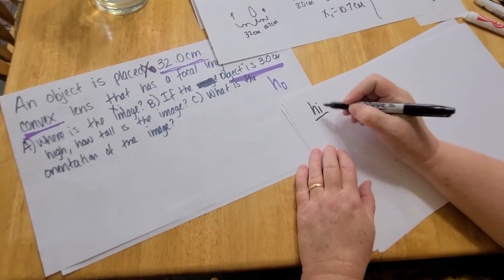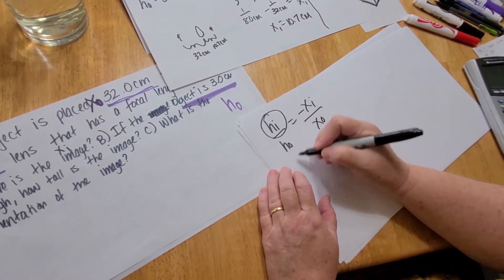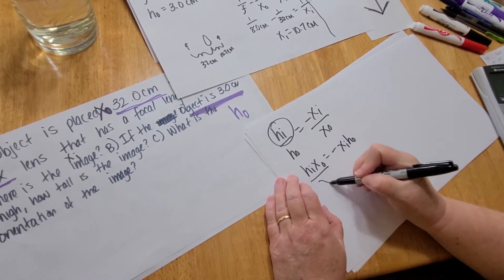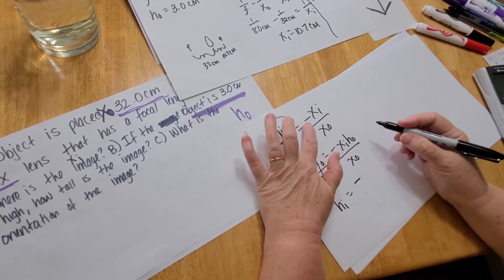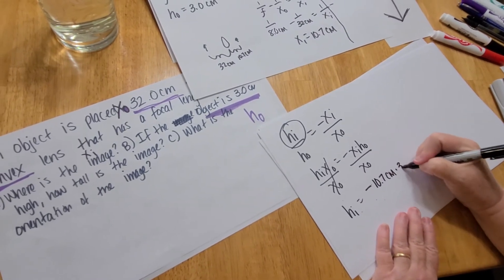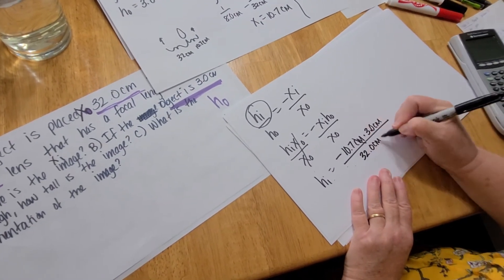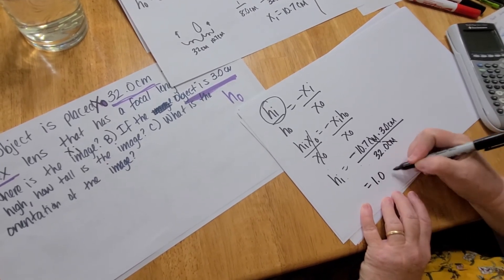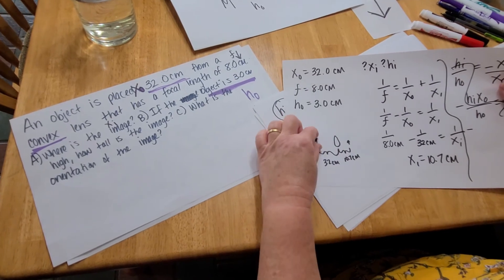HI over HO equals negative XI over XO. I cross multiply: HI times XO equals negative XI times HO. Then I divide both sides by XO. Negative XI, that's where the image is going to be located, so that's my 10.7 centimeters. I multiply that by the height of the object, three centimeters, divided by the placement of the object, 32 centimeters. One of the centimeters will cancel out. I take 10.7 times three and divide it by 32 and I get one. So the image is only going to be one centimeter high. Magnification can make things smaller. It's going to be one third as big as the actual one.